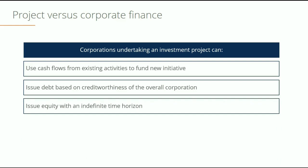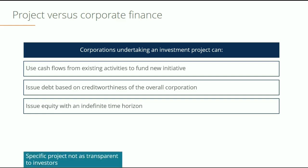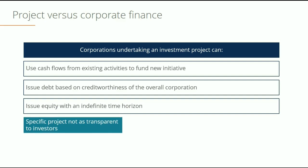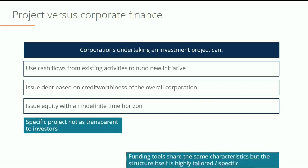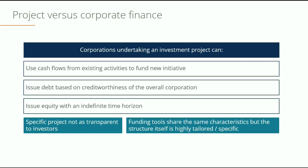Issuing equity with an indefinite time horizon is something that corporations can often do, whereas equity issued in a project finance investment typically has a defined life to it. There's a specific project with a time horizon for the equity, and the equity will be repaid at the end of that time horizon.